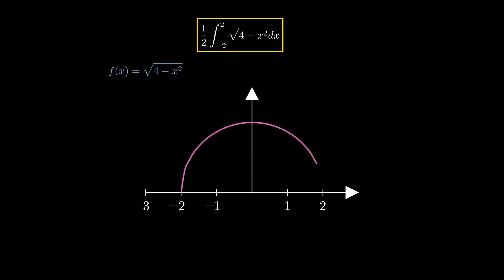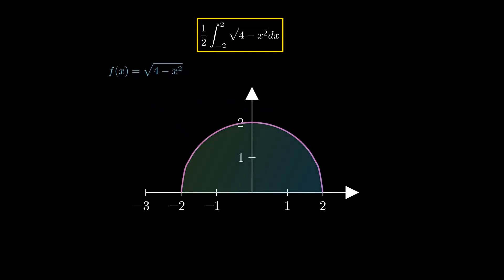which happens to be a semicircle with a radius of 2. We already know that the area of a semicircle is given by pi r squared over 2, which in this case simplifies to 2 pi.